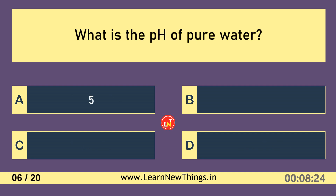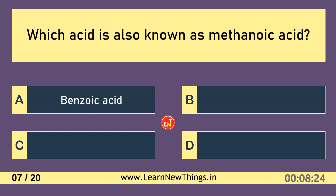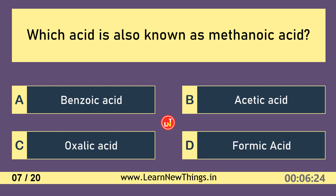What is the pH of pure water? Dibasic acid is also known as methanoic acid. Formic acid.